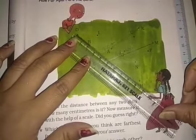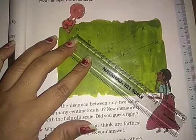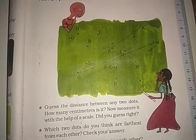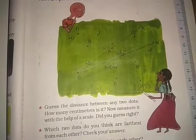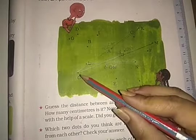And here it is near about 9.2. D and H is also near about 9. So which two dots do you think are farthest from each other? G and M are farthest from each other, because the length from G to M is 9.6.